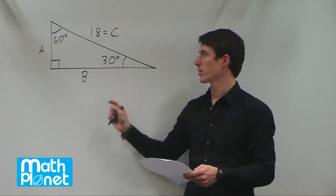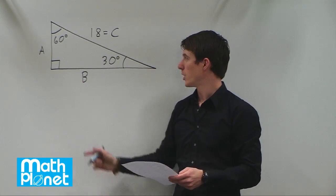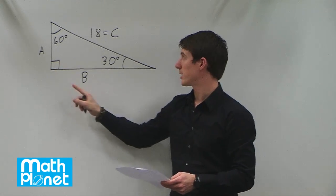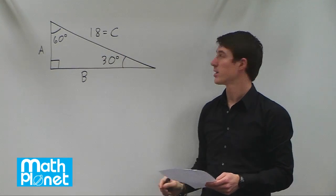Here we have a right triangle with a 30 degree angle and a 60 degree angle. We want to find the lengths of A and B if we're only given this length, C is equal to 18.